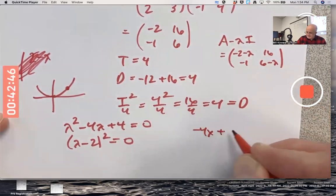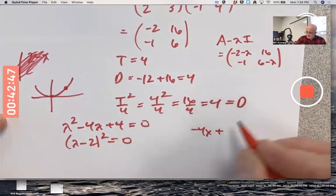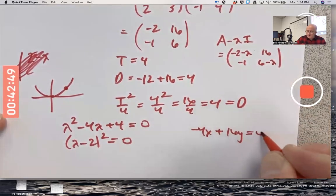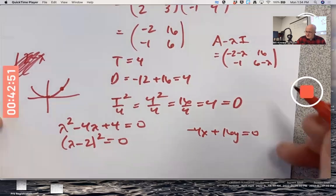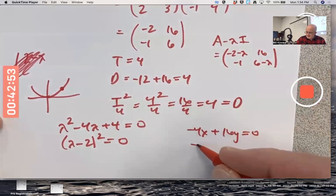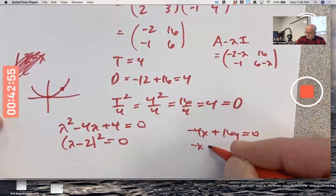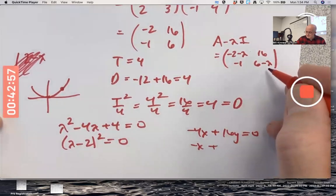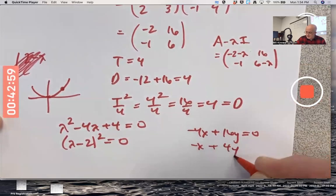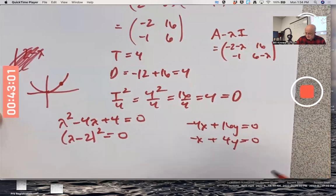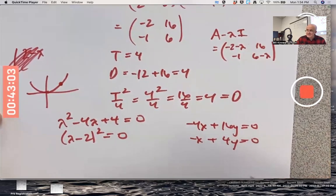Negative four x plus sixteen y equals zero. Probably should double check the other one. There's a multiple of it. If I replace lambda with two here, six minus two is four. Yeah. These equations are multiples of each other. They have the same solution set. And that solution set is one dimensional.